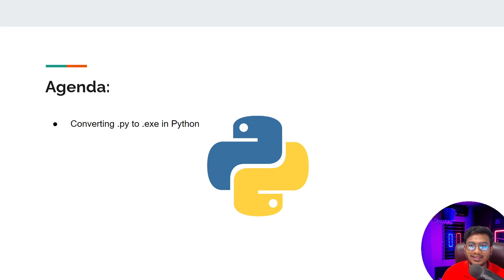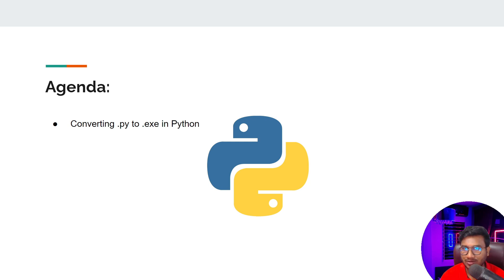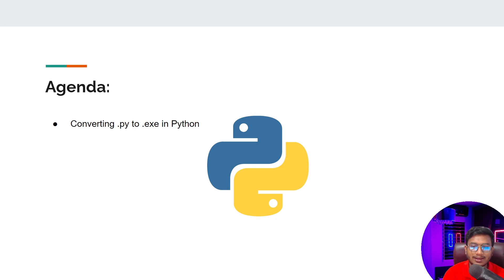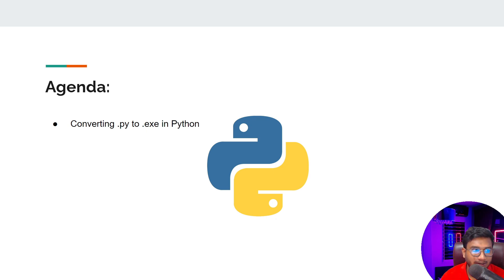Welcome back. In this video we'll be learning another interesting topic inside Python — converting a .py file to an executable file. Whenever you implement any kind of software, you write tons of code for it. To execute that software, you first have to create a virtual environment, then set up all the required packages, and then you can install and execute it.